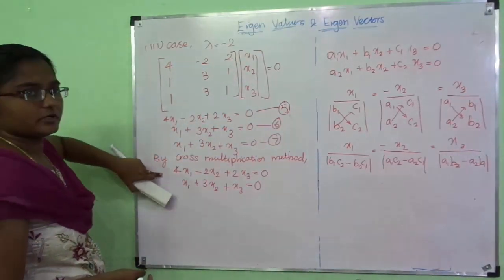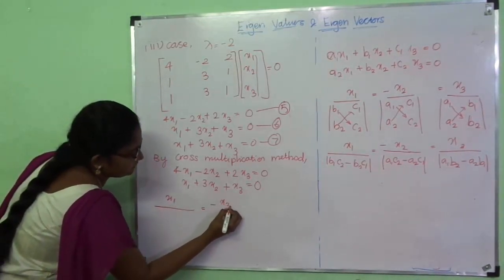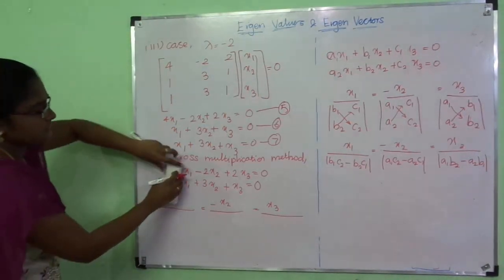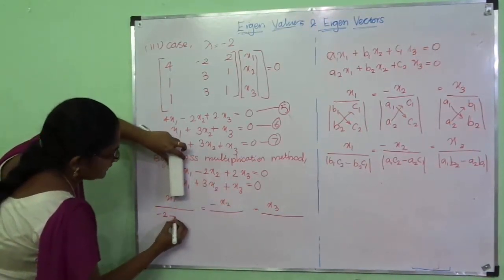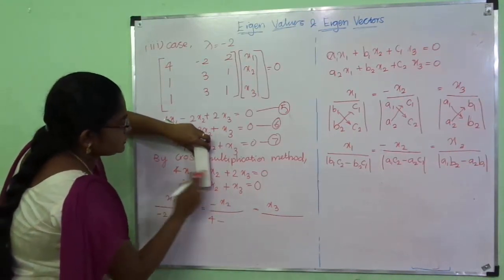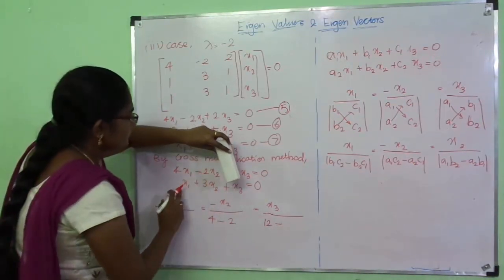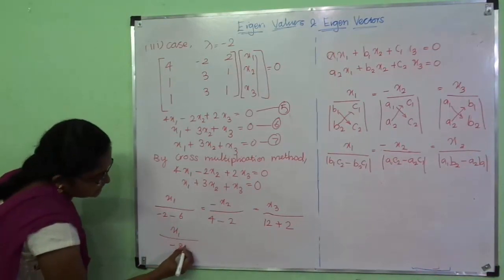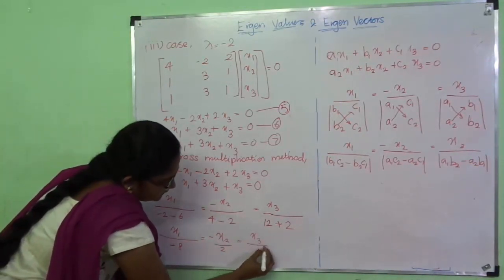Applying cross multiplication to find the eigenvector for lambda = minus 2: for x1, hide the x1 column and cross multiply: (minus 2)(1) minus (3)(2) = minus 2 minus 6 = minus 8. For minus x2, hide the x2 column: (4)(1) minus (1)(2) = 4 minus 2 = 2. For x3, hide the x3 column: (4)(3) minus (minus 2)(1) = 12 plus 2 = 14.